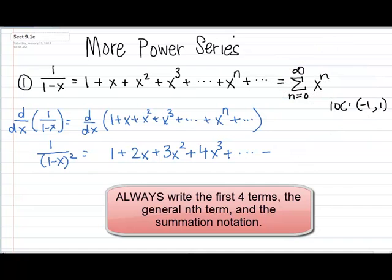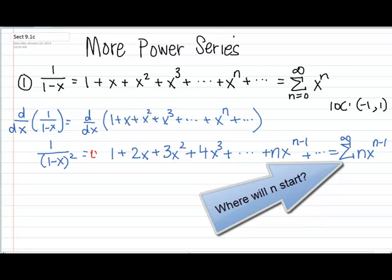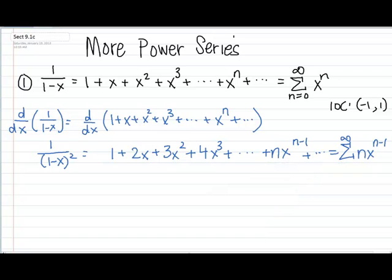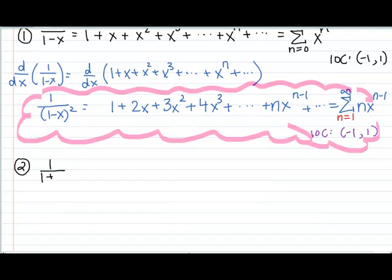I'm going to write four terms in my series and then the general nth one. We take the n, bring it down using our power rule, and we have x to the n minus 1 power. So our general nth term has changed to n times x to the n minus 1. Our first term is 1 when you have a 0 here, we don't count that 0, it's gone. So we're actually going to start at n equals 1. The IOC for this series is going to be the same.